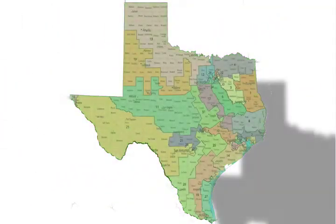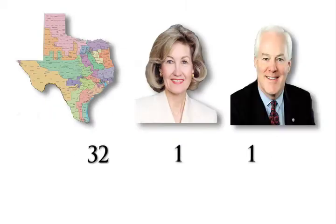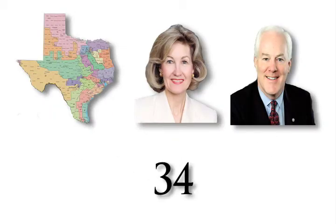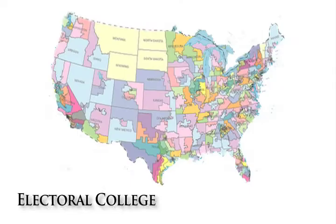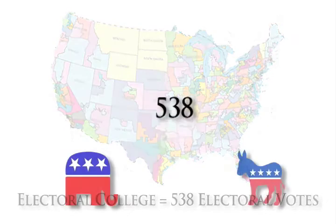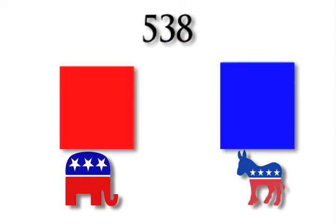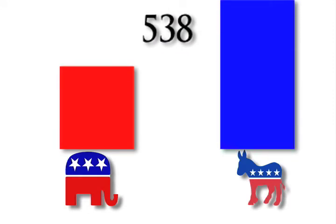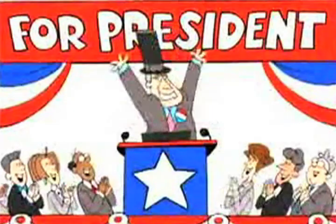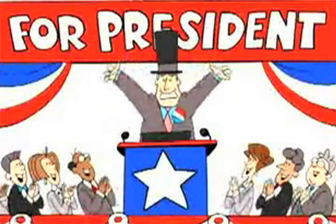Texas has 32 congressional districts and two senators, so we have 34 electoral votes for the state of Texas. The entire electoral college's combined amount of electoral votes is 538, and the nominee that hits 270 electoral votes, or at least the majority of votes, wins the election and becomes the next president of the United States of America.